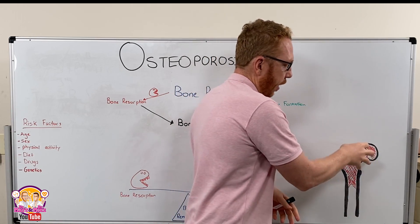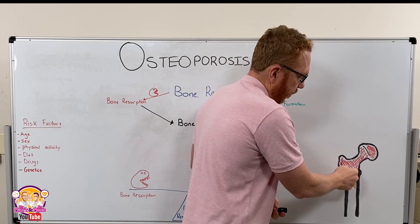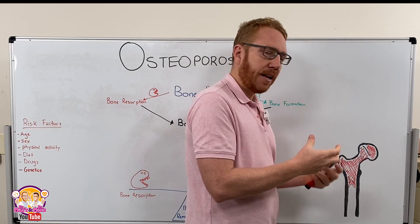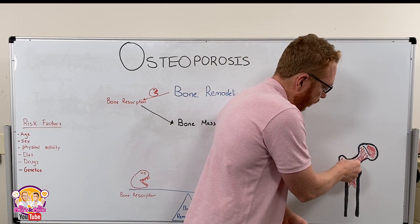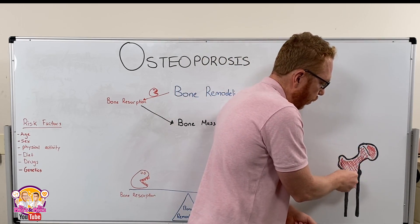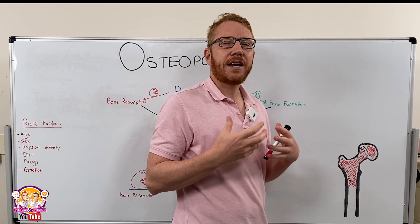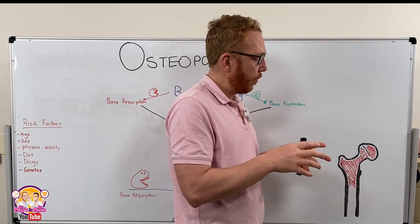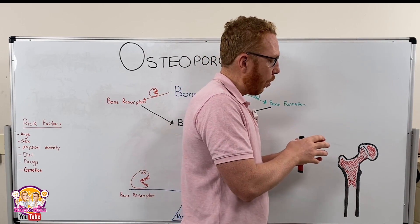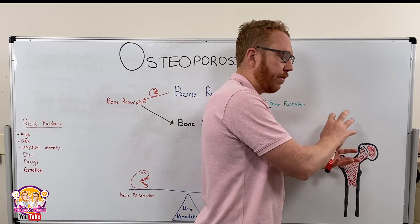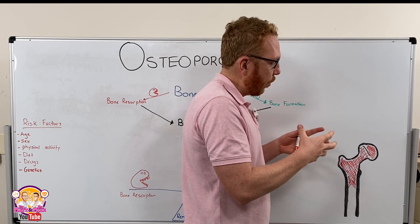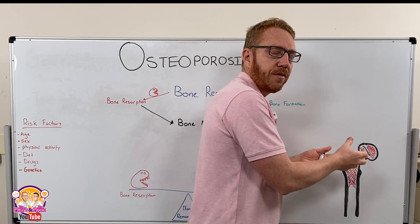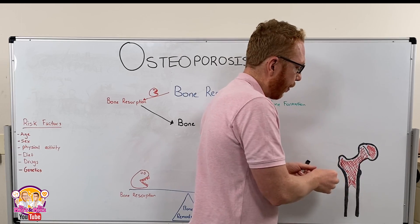Deeper to compact bone is spongy bone, shown in red. This is less dense and has small holes all the way through it, which makes it look like a sponge — which is why it's called spongy bone. This tissue allows for flexibility and strength without the weight associated with compact bone.